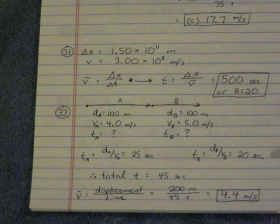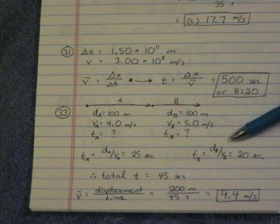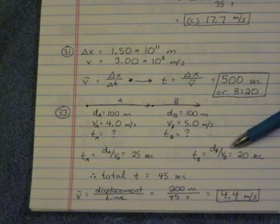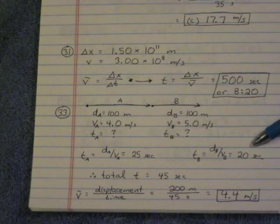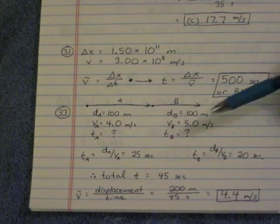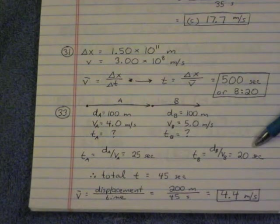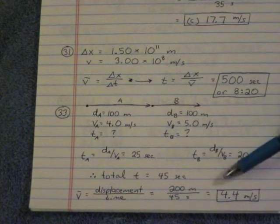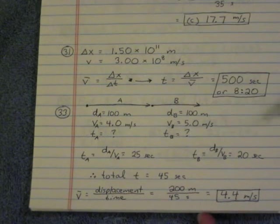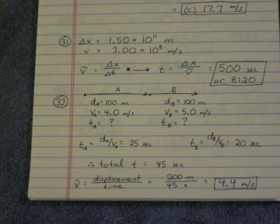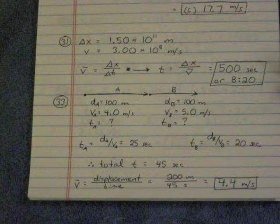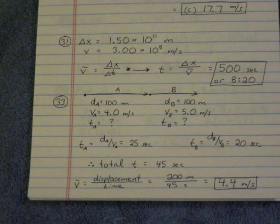We do the same thing for part B. It's the distance of 100 meters divided by the speed of 5 meters per second. And so B only took 20 seconds. We add those together. We get the total run was 25 plus 20 seconds, 45 seconds. And now we can put that in at the bottom of the page. Average velocity is the displacement, 200 meters, divided by 45 seconds, which gives 4.4 meters per second.